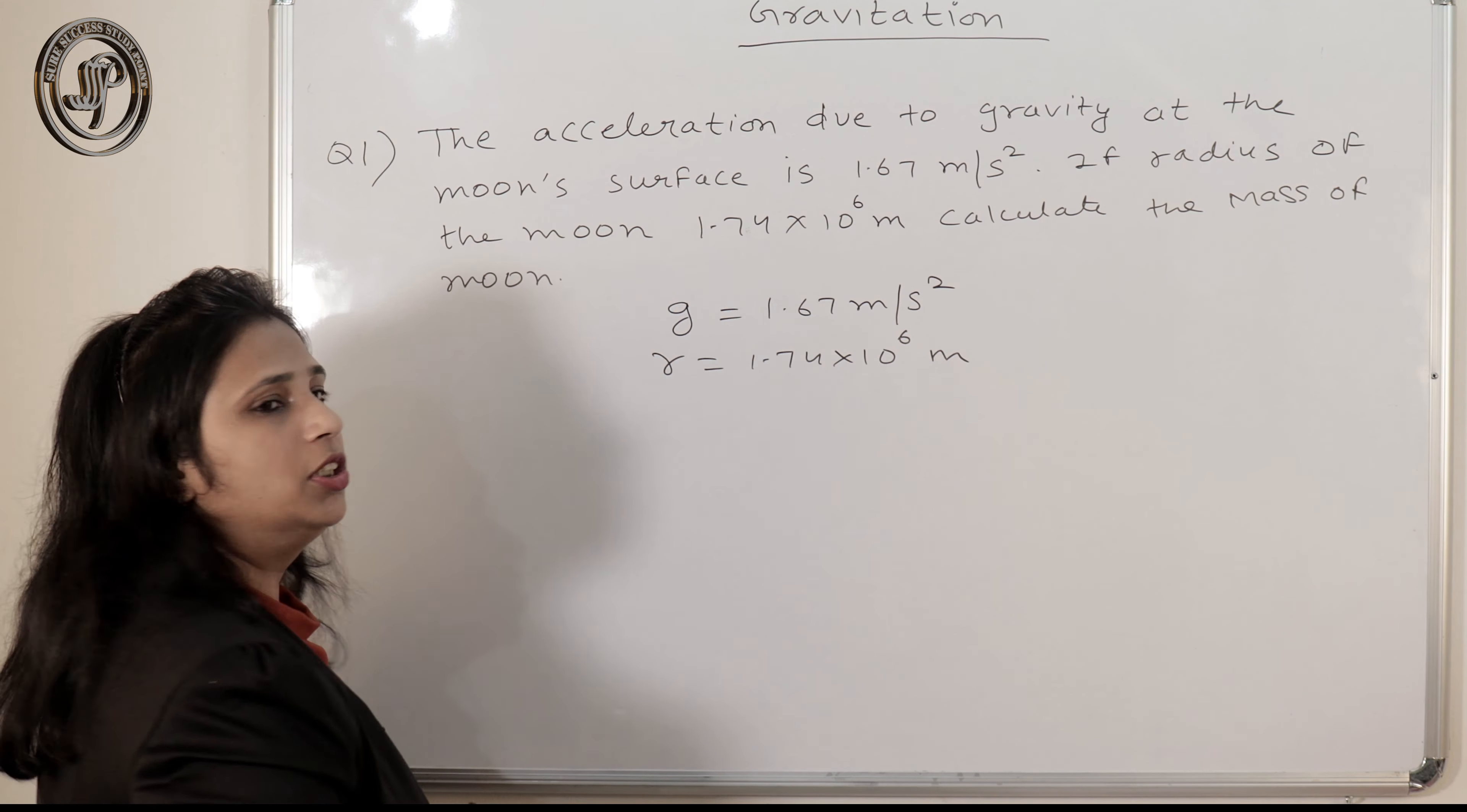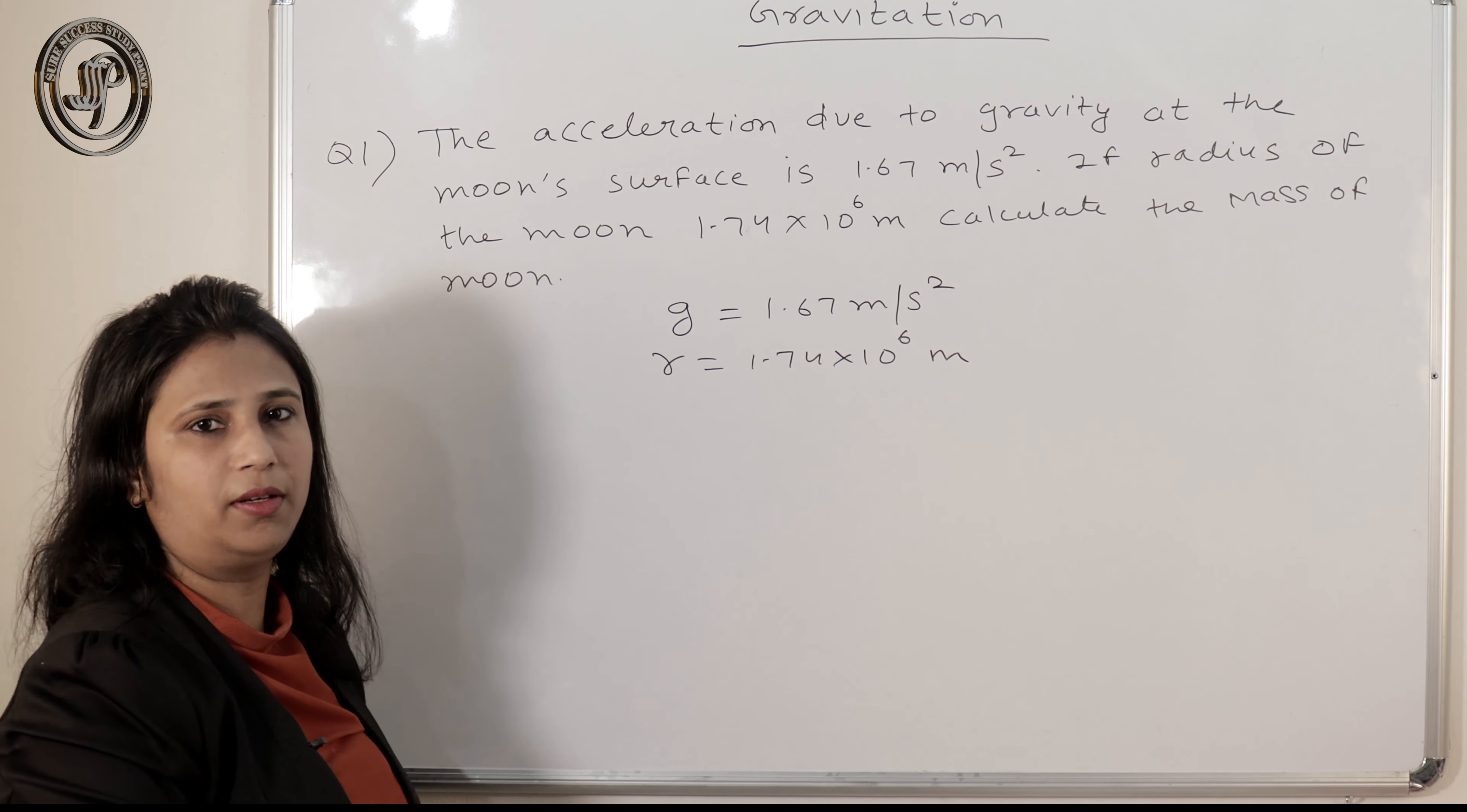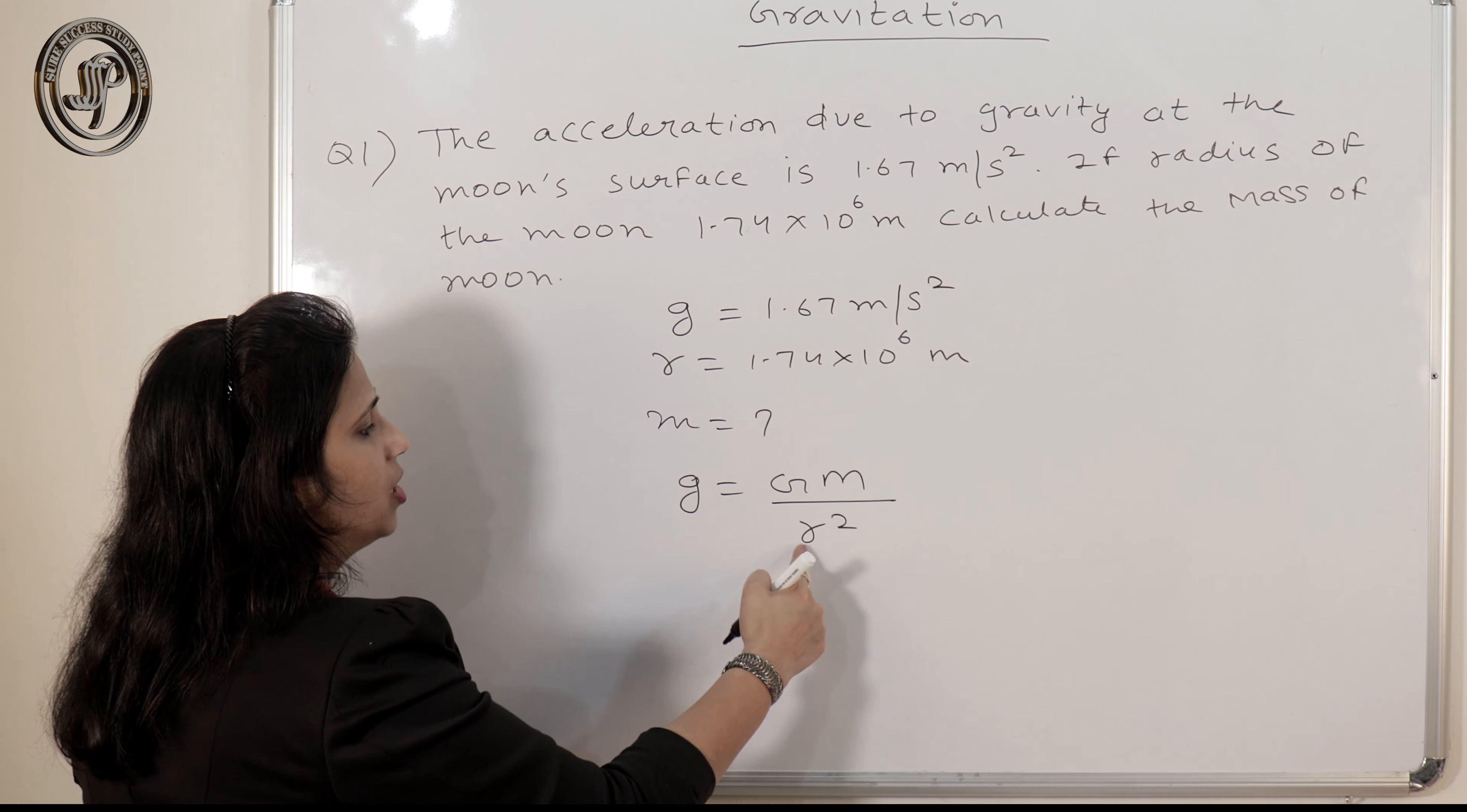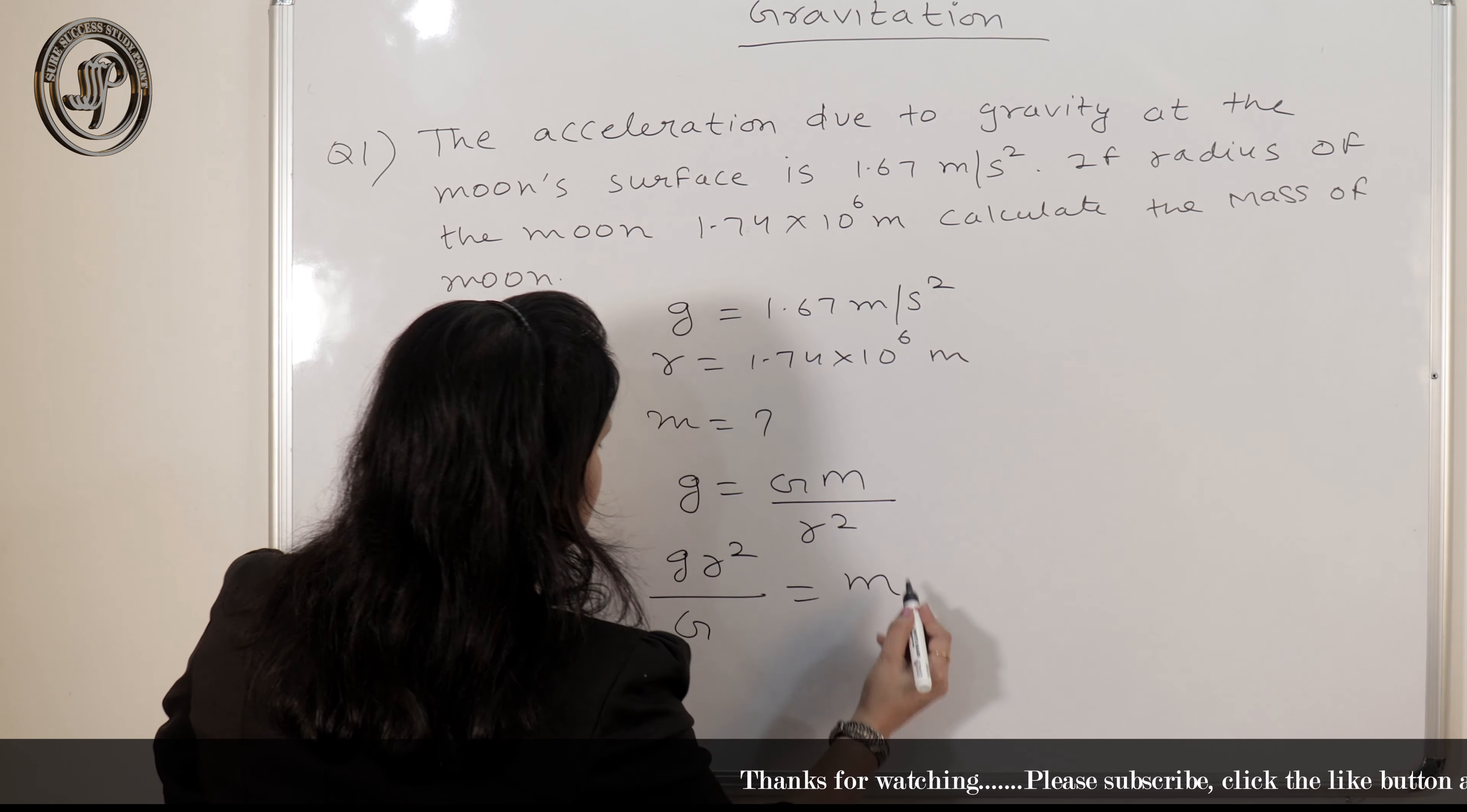Okay, so the value of g is not constant. The value of g varies. On the surface of earth, its value is 9.8 meter per second square. So, we have to calculate mass. So we know g is equal to Gm by r square. For whatever planet we are taking g, that planet's mass and that planet's radius is used. So we have to calculate mass.